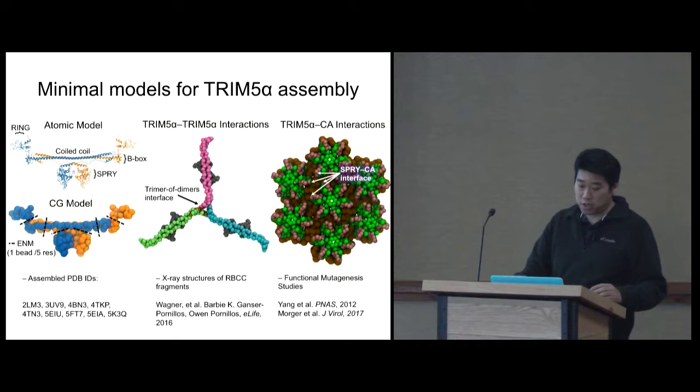So we needed to develop a coarse-grained model to simulate the assembly of the TRIM5α onto the capsid surface. We started with the atomic model shown here. You can see that the protein is a dimer. This was assembled from various fragments of the protein available in the PDB, and it's composed of several domains: a RING domain here, a coiled-coil domain, a B-box domain, and a SPRY domain. Now this B-box domain is responsible for TRIM-TRIM interactions, whereas the SPRY domain is responsible for TRIM-capsid interactions.